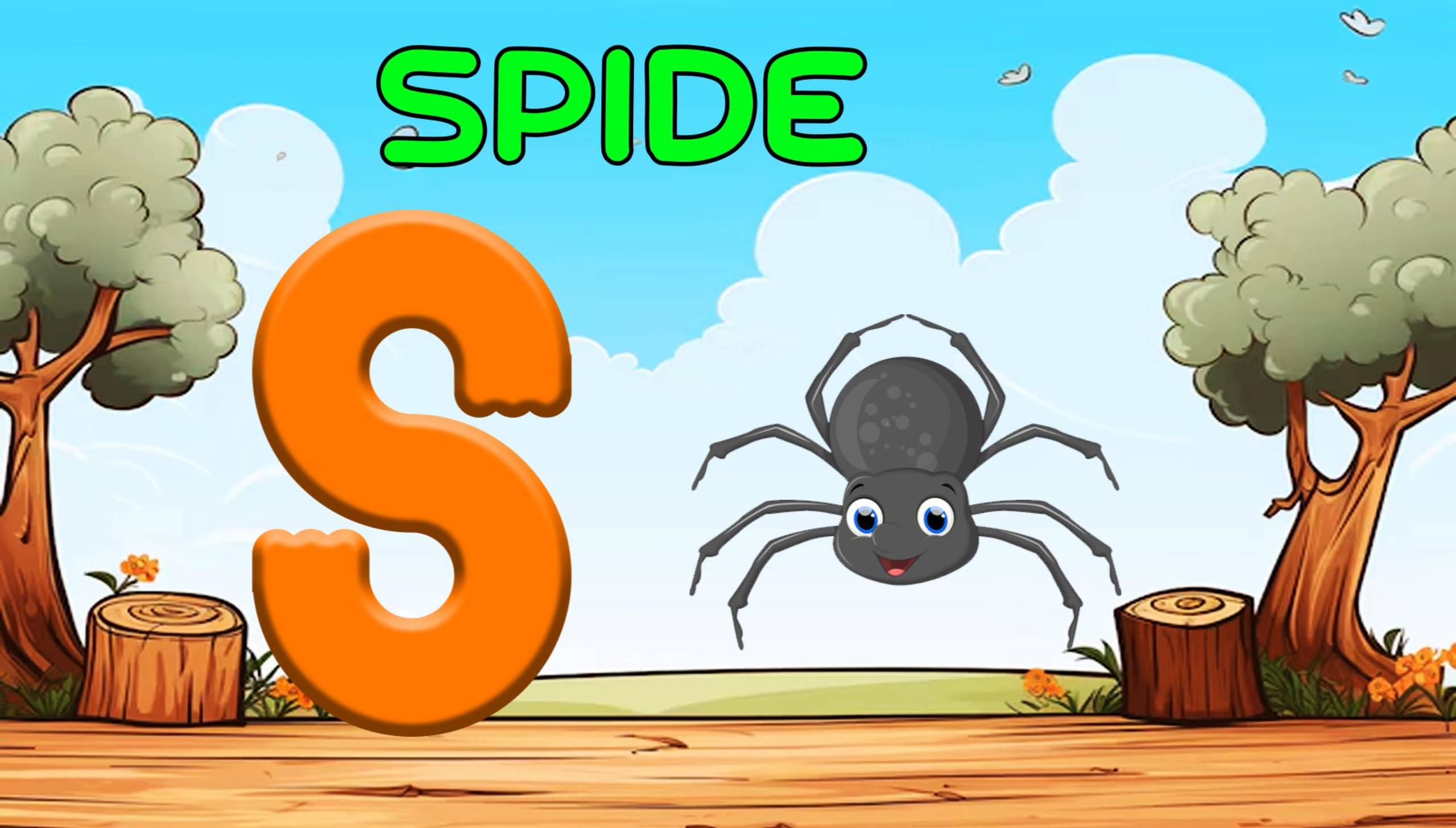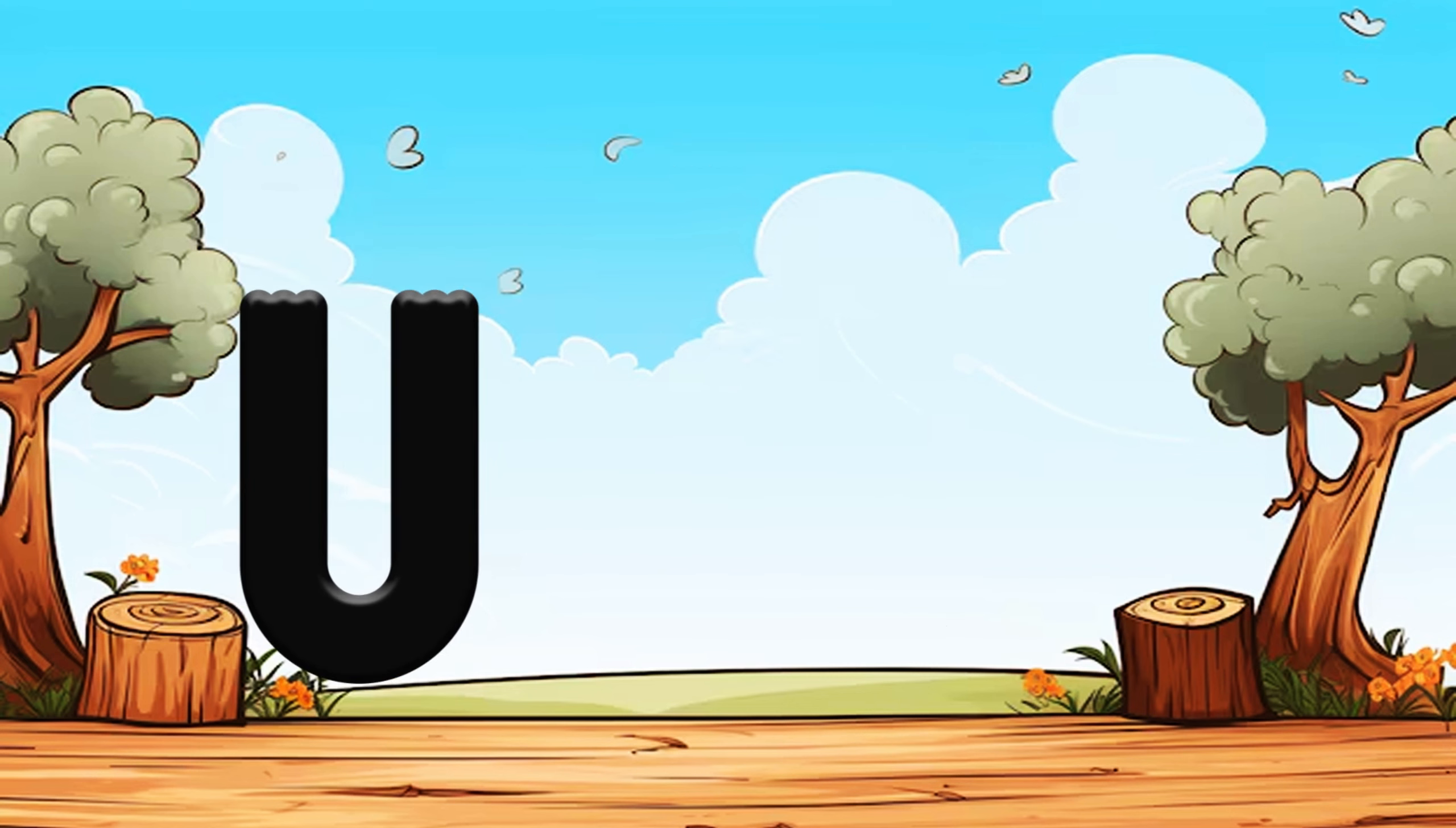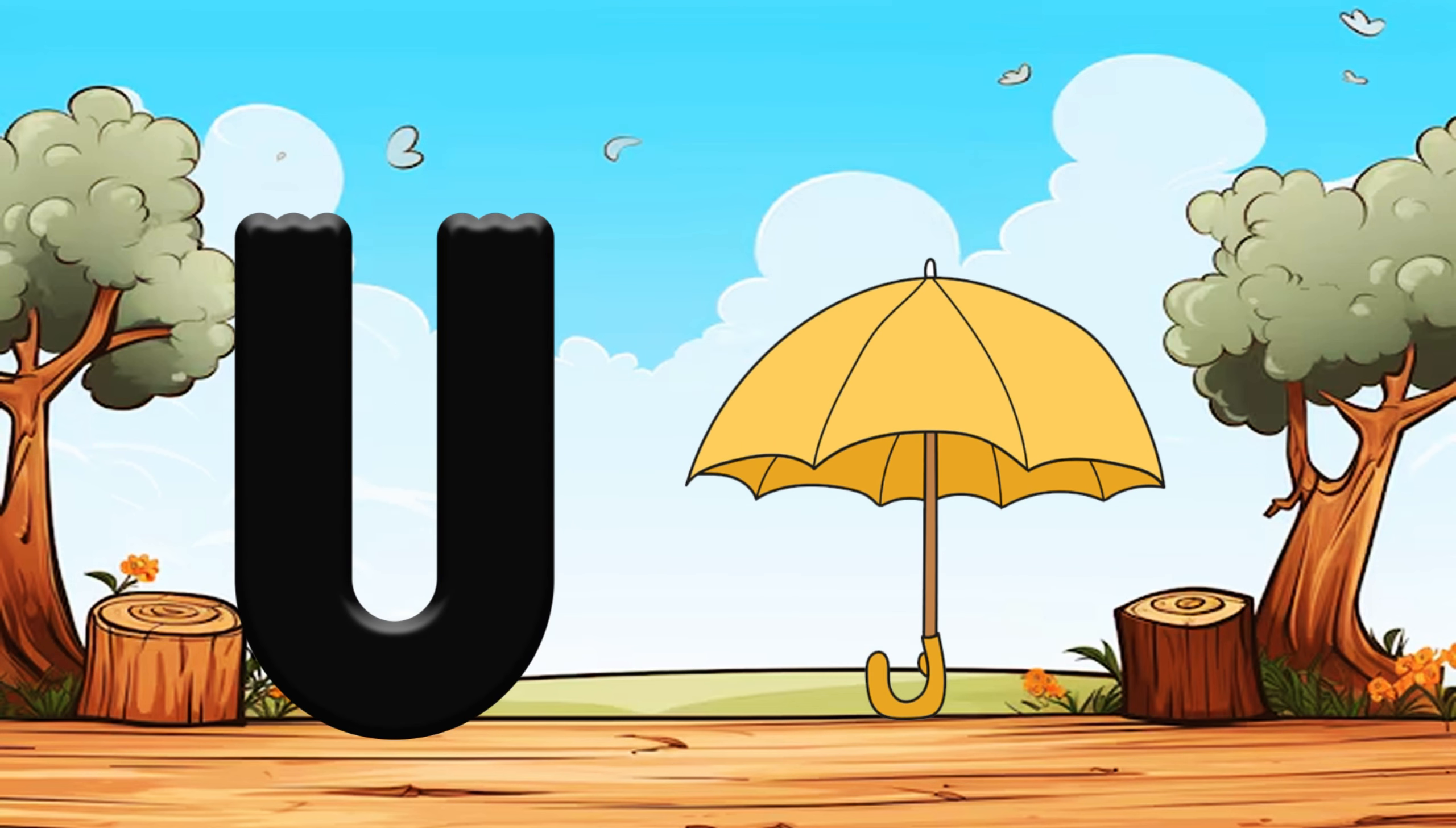S is for Spider, Sh, Sh, Spider. T is for Tiger, Da, Da, Tiger. U is for Umbrella, A, Umbrella.